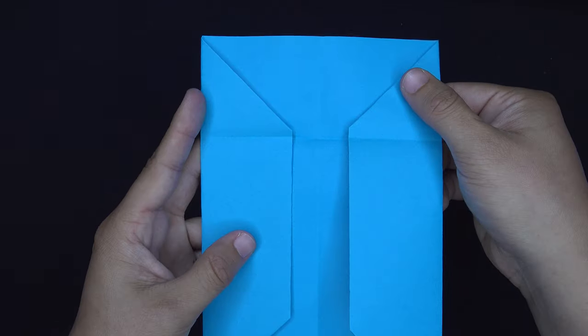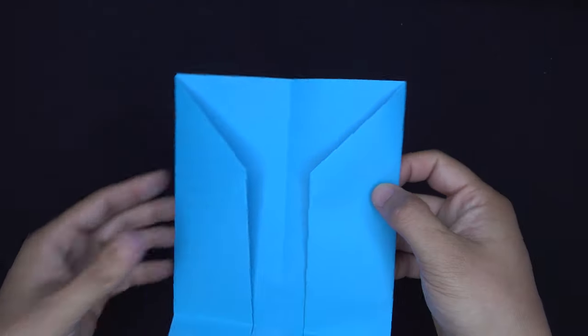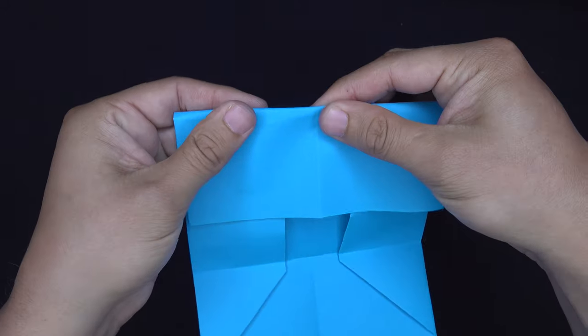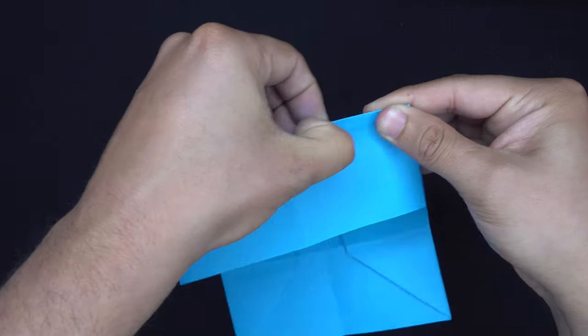Then you can unfold the edge and do the same on the other side. Press on the corners, fold the edge down and give it a nice sharp crease.